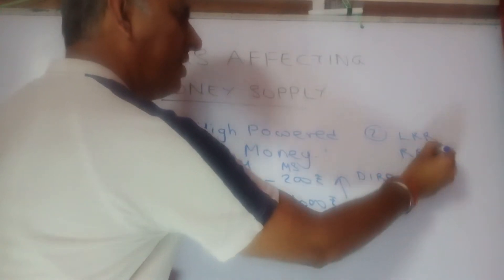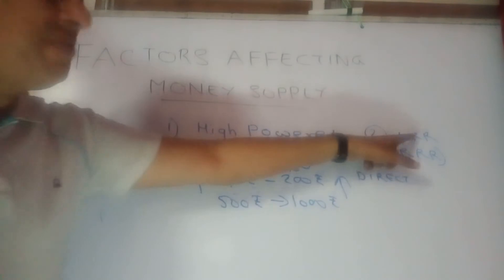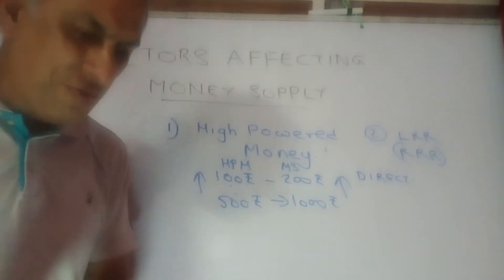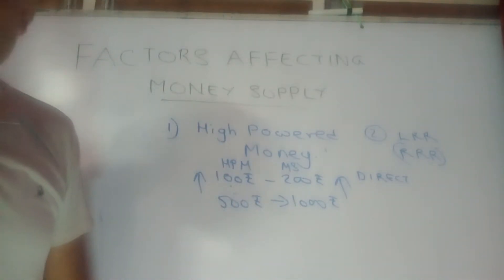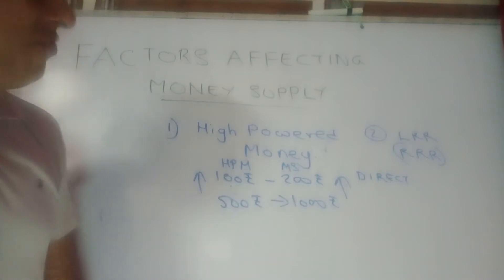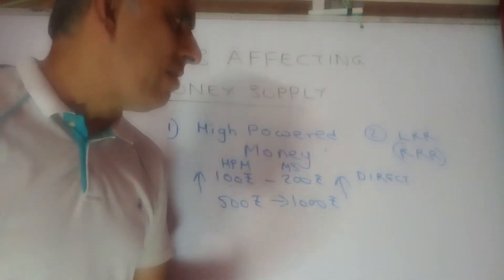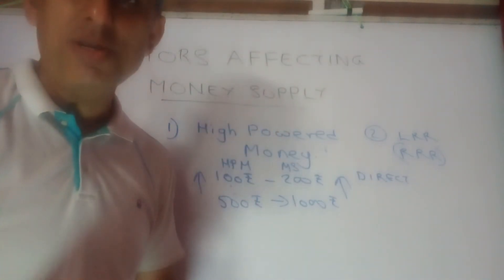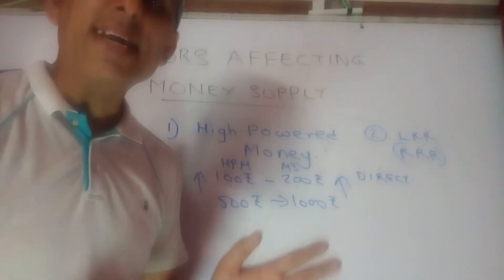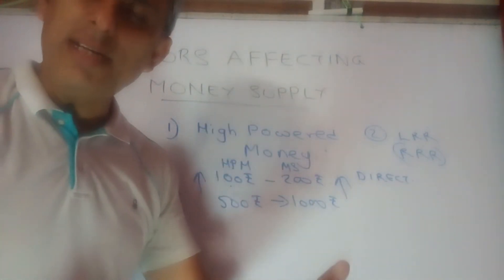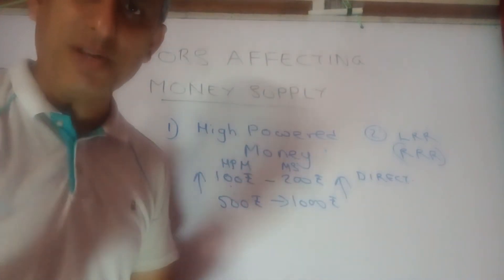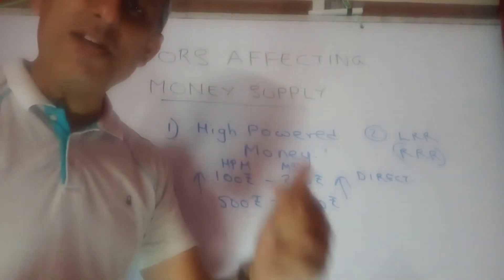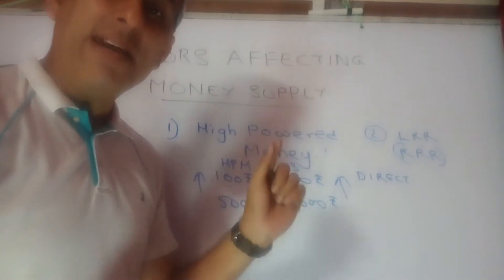The second factor is LRR, also referred to as RRR — Legal Reserve Ratio or Required Reserve Ratio. It is a ratio which prescribes a percentage of the initial deposits which are required to be maintained as such by commercial banks, and therefore the bank cannot lend that portion to firms or industries for the purpose of production. LRR played a very important role in the process of money creation.